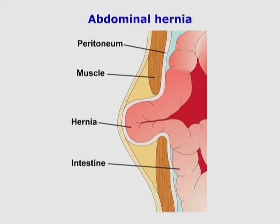An abdominal hernia may appear anywhere on the abdominal wall, usually due to a muscular weakness, whether developmental or acquired.